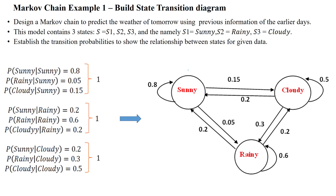These three states — S1, S2, and S3 — are called hidden states in a hidden Markov model. In the Markov chain process, state 1 through state 3 are defined as per the given problem statement. Thanks for watching.